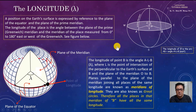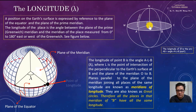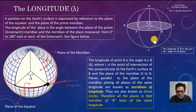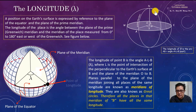The longitude of point B is the angle A, L, B, where L is the point of intersection of the perpendicular to the Earth's surface at B and the plane of the meridian 0 to B. Planes parallel to the plane of the meridian joining all places of the same longitude are known as meridians of longitude. They are also known as great circles. Therefore, all places on the meridian of B have the same longitude.